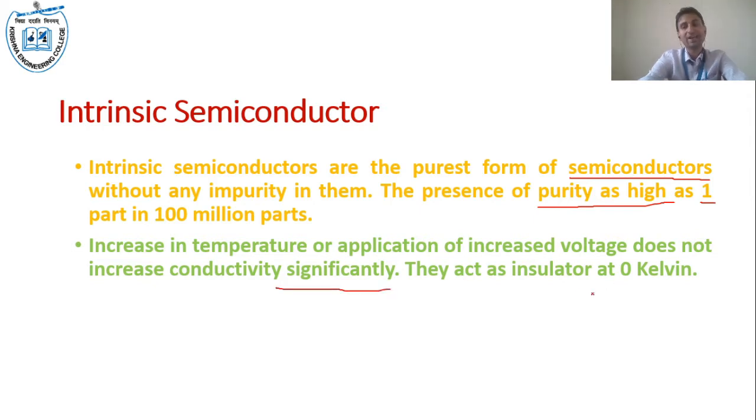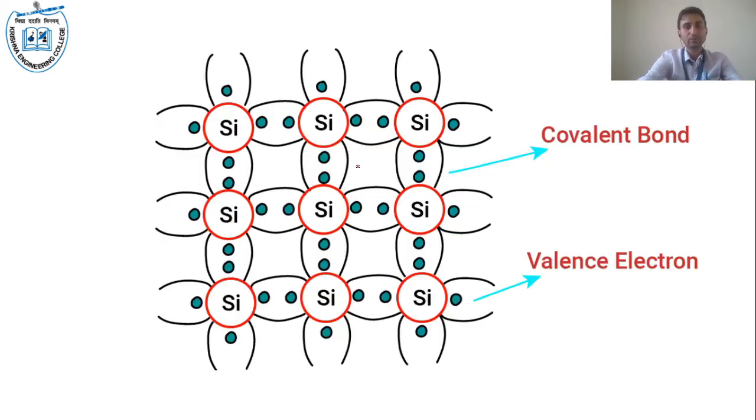It means that at zero current, this intrinsic semiconductor behaves completely as an insulator. Let us see the next part. I will explain the crystalline structure of intrinsic semiconductor.